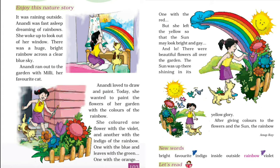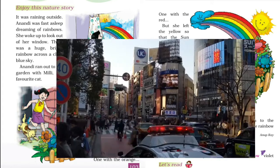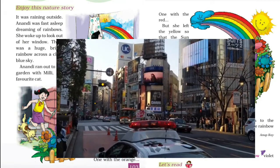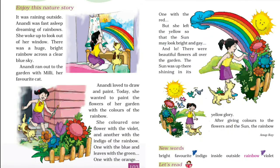She woke up to look out of her window. Look out means to look outside. She got up and looked out of her window. There was a huge bright rainbow across a clear blue sky. Huge means very big, across means from one side to the other, and clear means clean. The sky was completely blue.